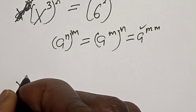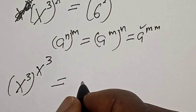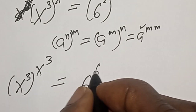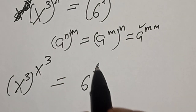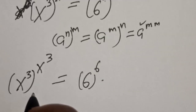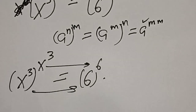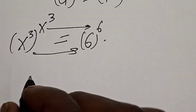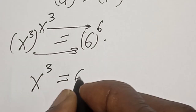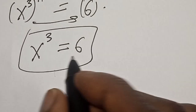We now have s raised to the power of s raised to the power 3, which equals 6. By comparing both sides, this equals this, and this one equals 6. Therefore, s raised to the power 3 is equal to 6.